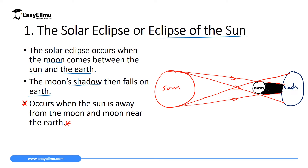During a solar eclipse, two shadows are formed. The first is the total darkness shadow called the umbra, and above and below the umbra, rays intersect to give a partial darkness shadow called the penumbra. So during a solar eclipse, part of the Earth's surface receives total darkness — the umbra — and another part receives partial darkness — the penumbra.